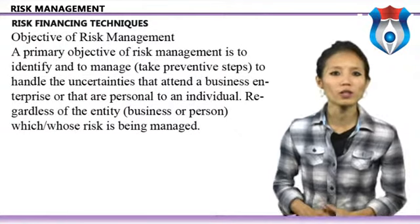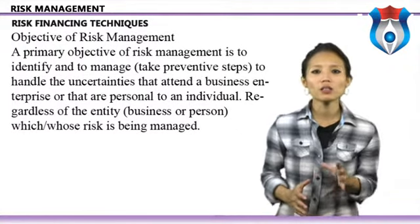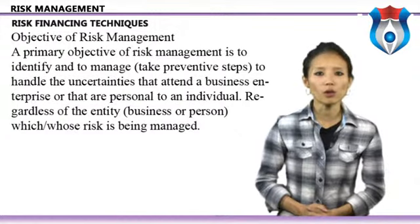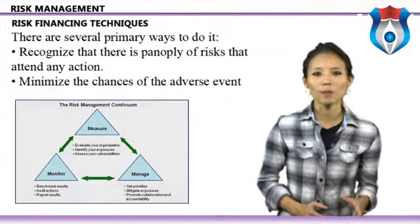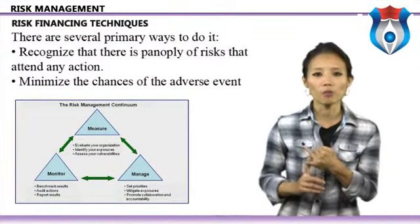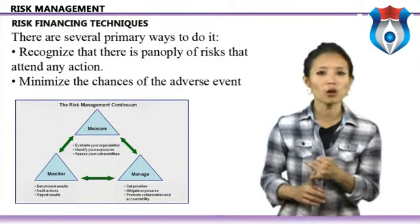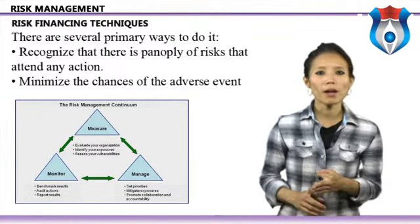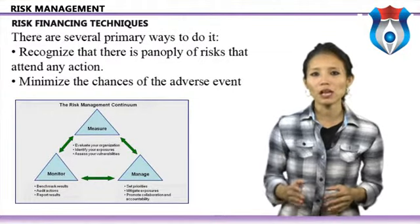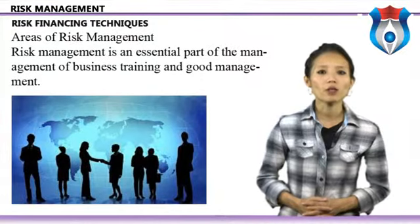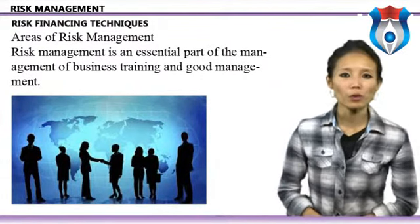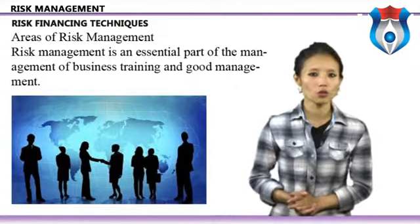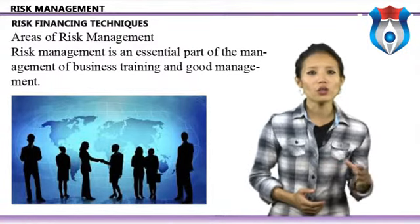A primary objective of risk management is to identify and manage preventive steps to handle the uncertainties attending a business enterprise or an individual. There are several primary ways: recognize the full range of risks attending any action and be prepared to withstand their financial impact. Risk management is an essential part of business management, and effective risk management is one of the most appreciated qualities of good leadership. The culture of risk management should be an integral part of every business enterprise.